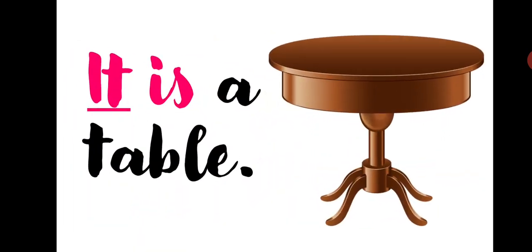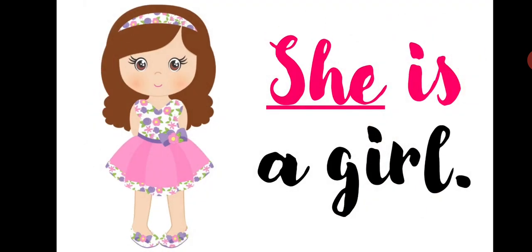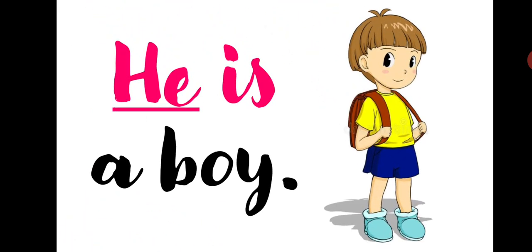First friend is it. Let's use it in a sentence. It is a table. Is is used with it here. Second friend is she, like she is a girl. Is is used with she also. Now comes the third friend, that is he.